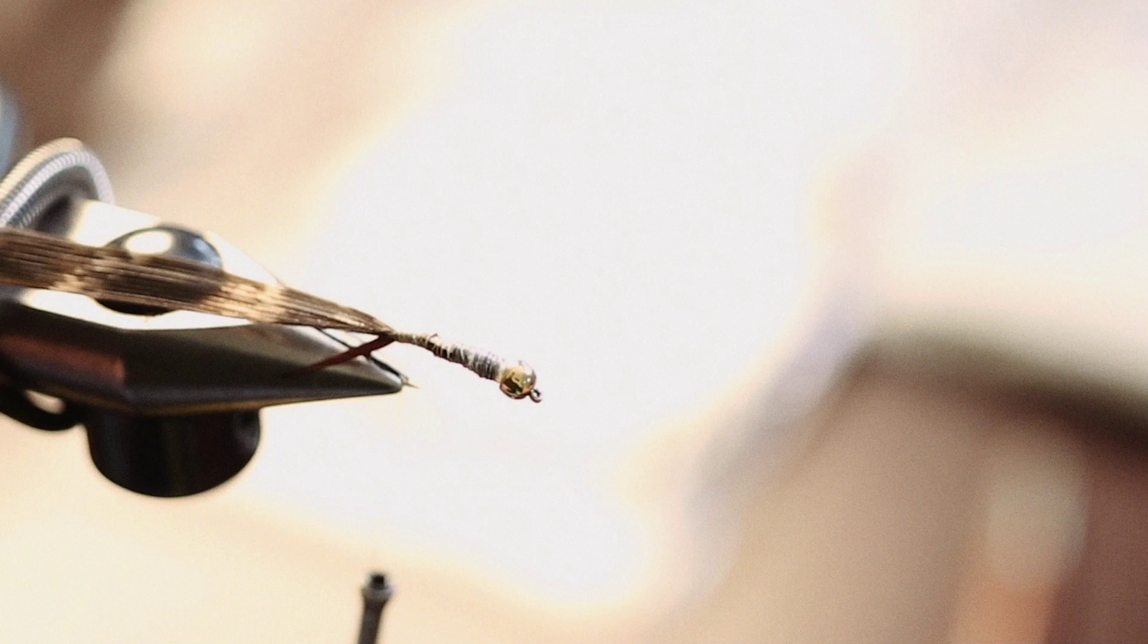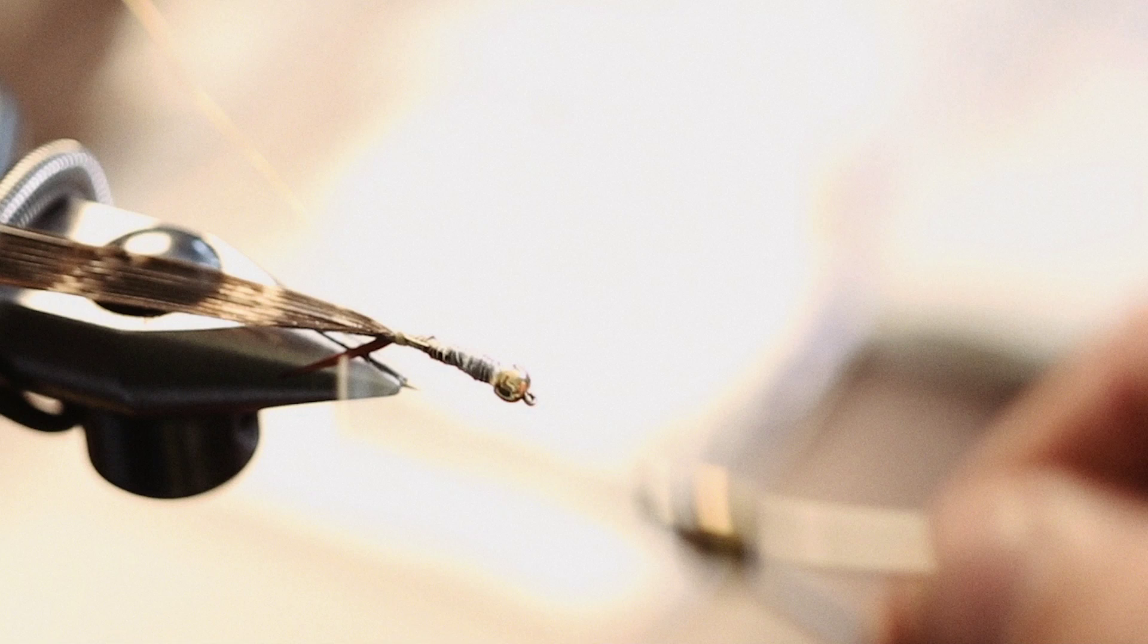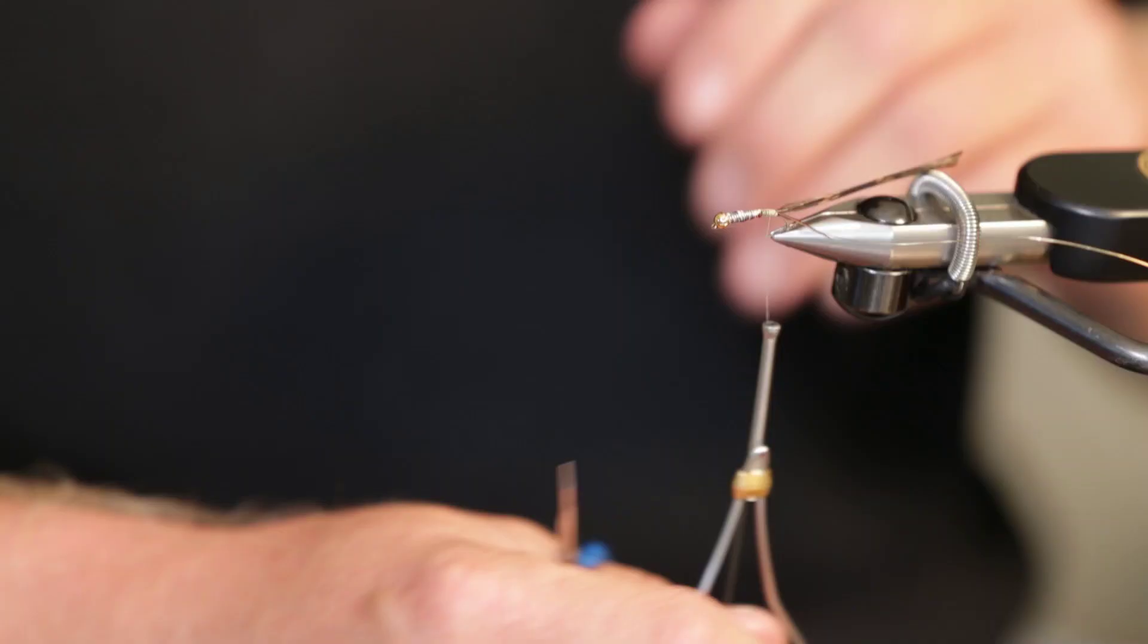After we get our turkey tied in, we need to take some medium gold wire. We're going to tie that in right at the bend of the hook as well. That's going to be our rib.